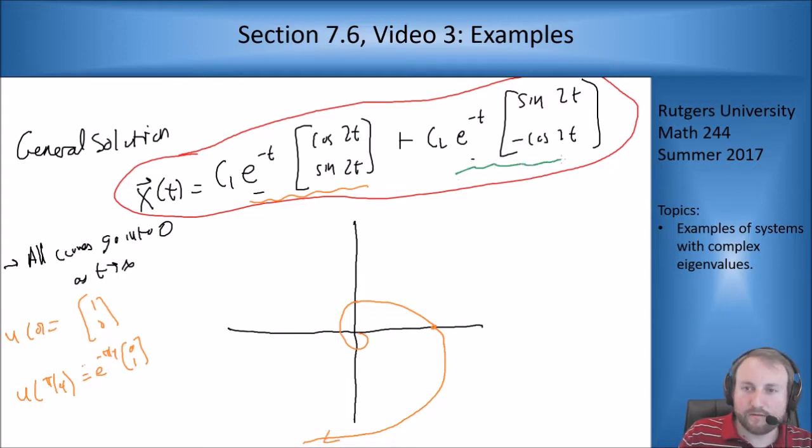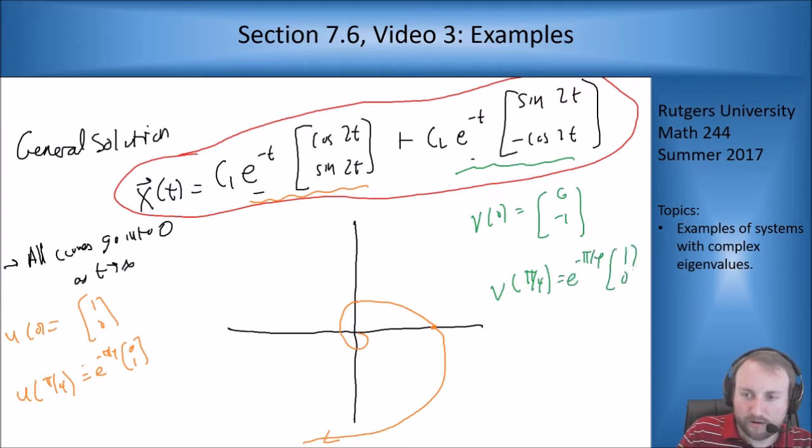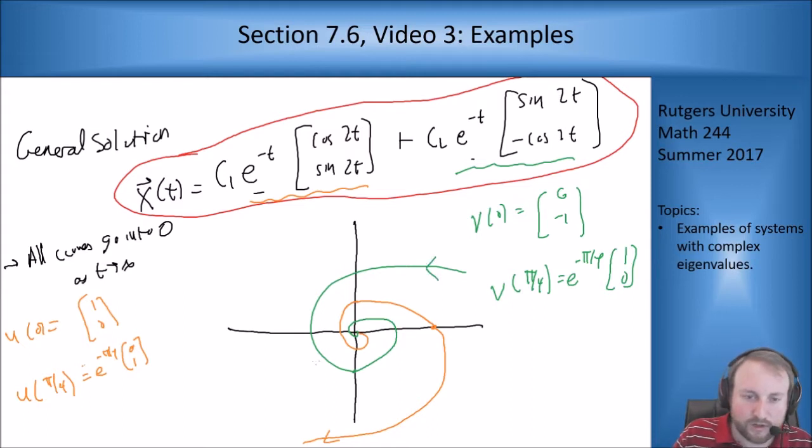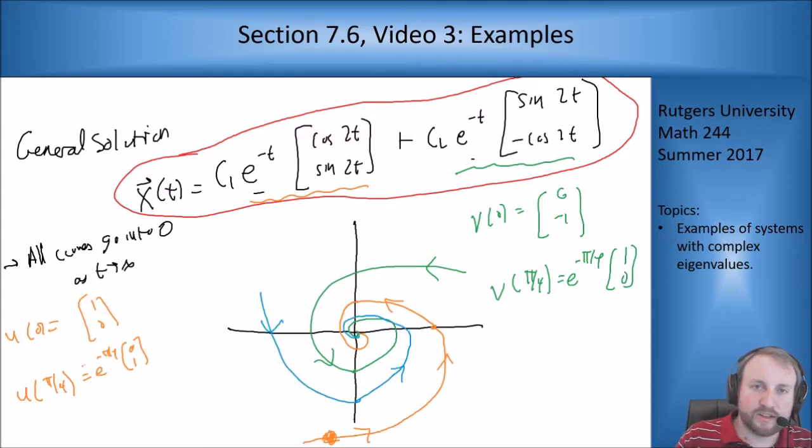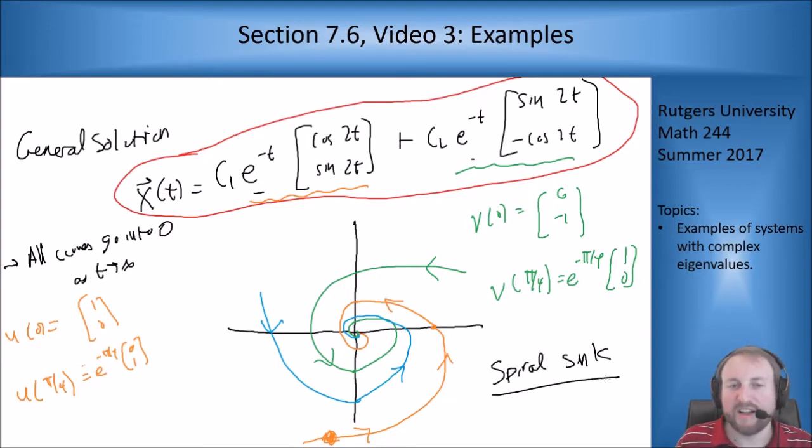If I look at my second solution, v of 0 is going to be 0, minus 1 and v of pi over 4 is going to be e to the minus pi over 4 times 1, 0. So it's going to start here and go in this way and then do that on the other direction. And the curves are not going out like I drew wrong on the other one. These curves are going in towards 0 because of the e to the minus t terms in front. And if you want, you can fill in other curves to your solution. So there's the phase portrait for this guy. This guy is what's called a spiral sink because it spirals and everything goes in towards the center.